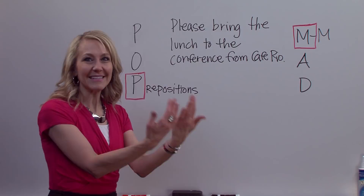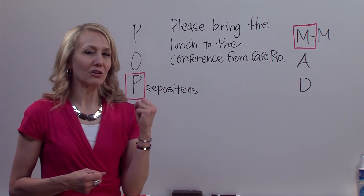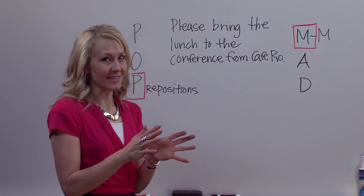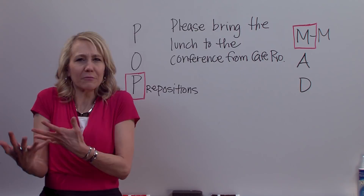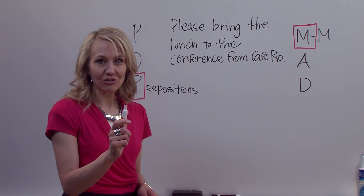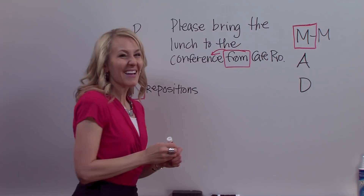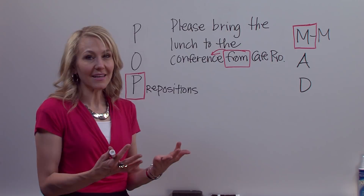Let's look at this sentence: Please bring the lunch to the conference from Cafe Rio. In other words, you're hungry, you're at a conference, and someone bought lunch at Cafe Rio — please bring it to the conference so you can eat it. However, this sentence, even if it sounds okay to your ear, is incorrect. The sentence is actually saying there's a conference from Cafe Rio and you want the lunch brought to it. I'm going to mark my prepositional phrase to see what it's hanging on to. The preposition from is saying the conference is from Cafe Rio — but in actuality, what's from Cafe Rio? It's the lunch. I need to rewrite the sentence.